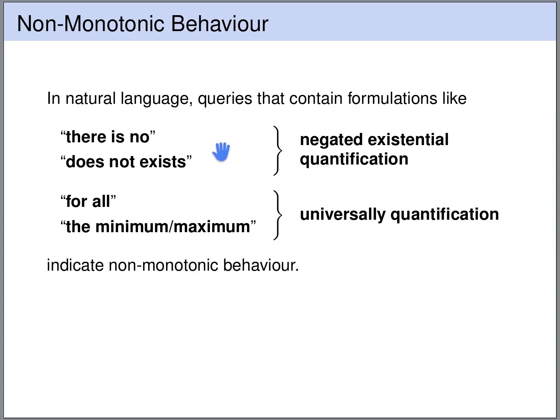If you have statements like 'there is no homework result' or 'there does not exist a homework result,' then if you have a database state where this is true, the insertion of a homework result will make this statement false. Similarly, if you say that for all homework results the points are at most 8, then an insertion of a homework result with 10 points would invalidate this statement. This is why these kinds of statements indicate non-monotonic behavior.